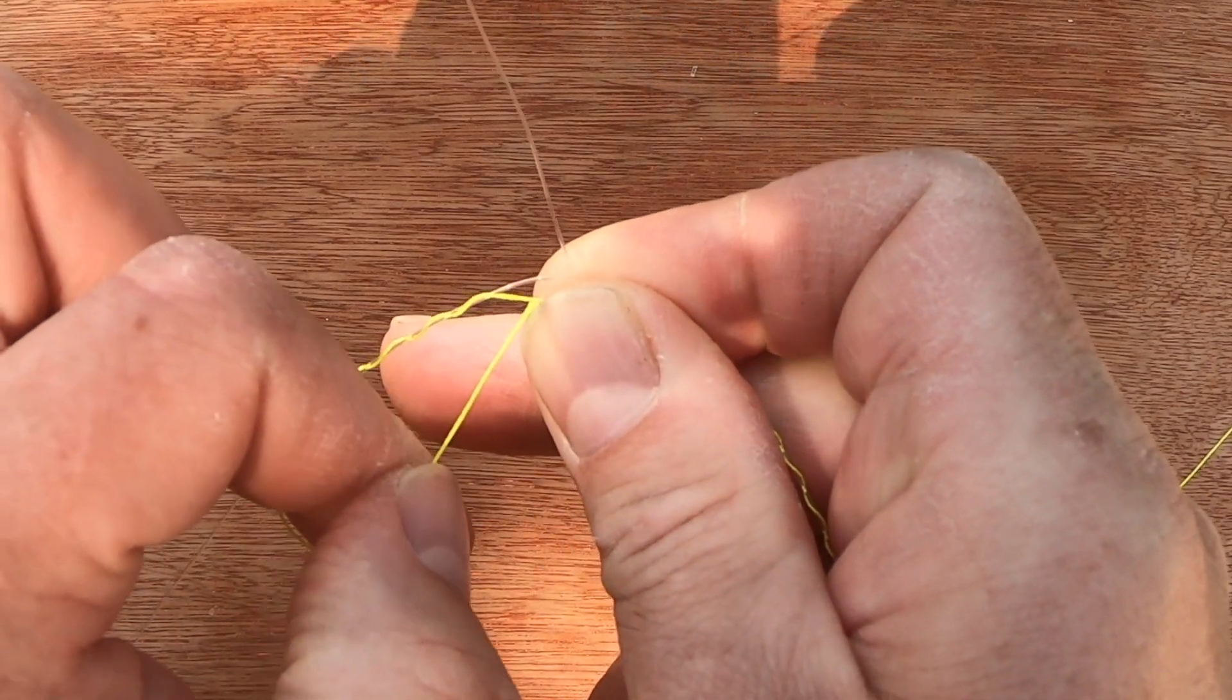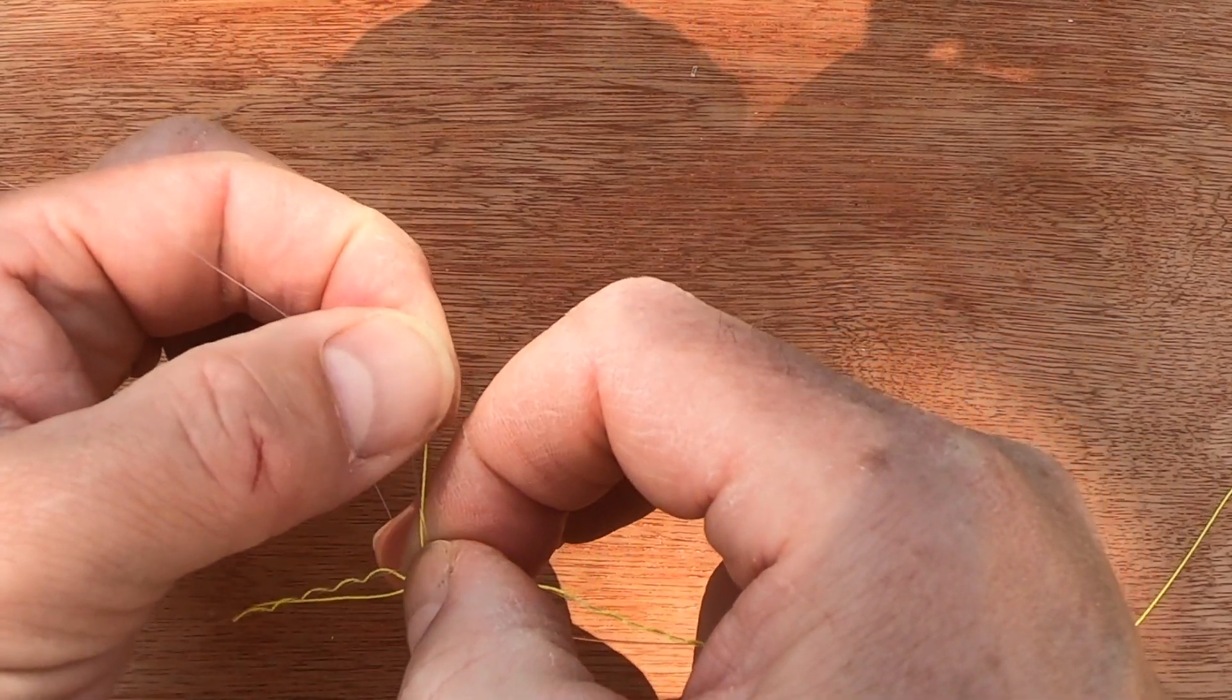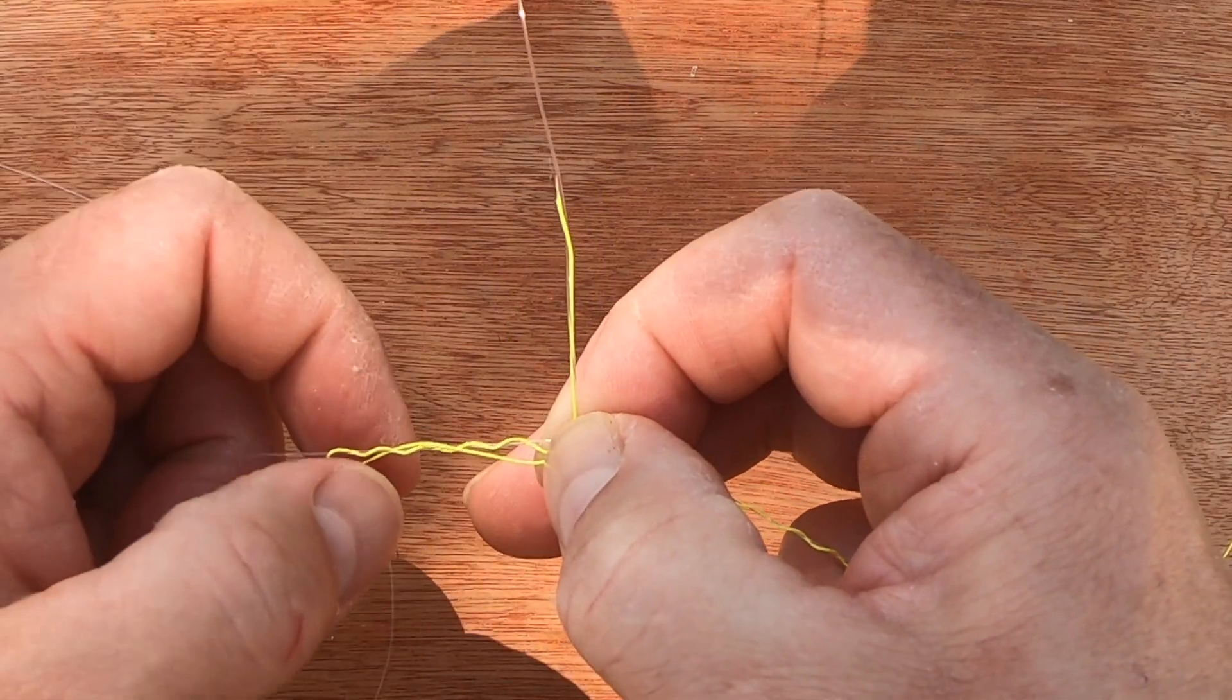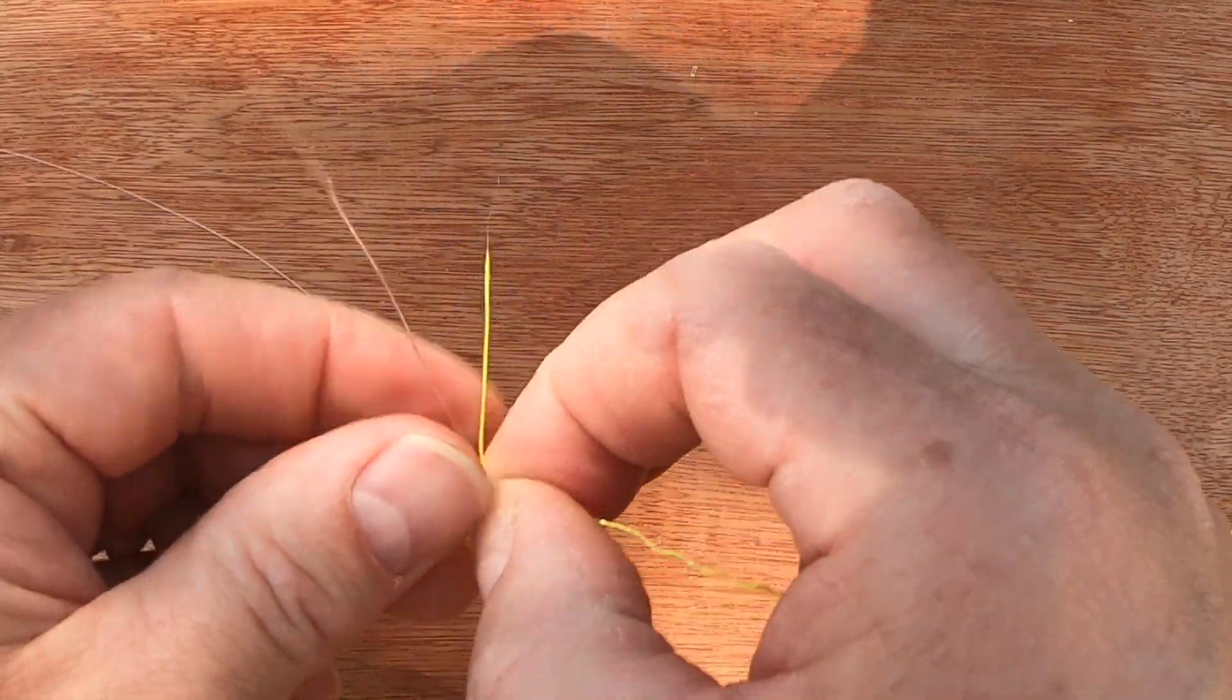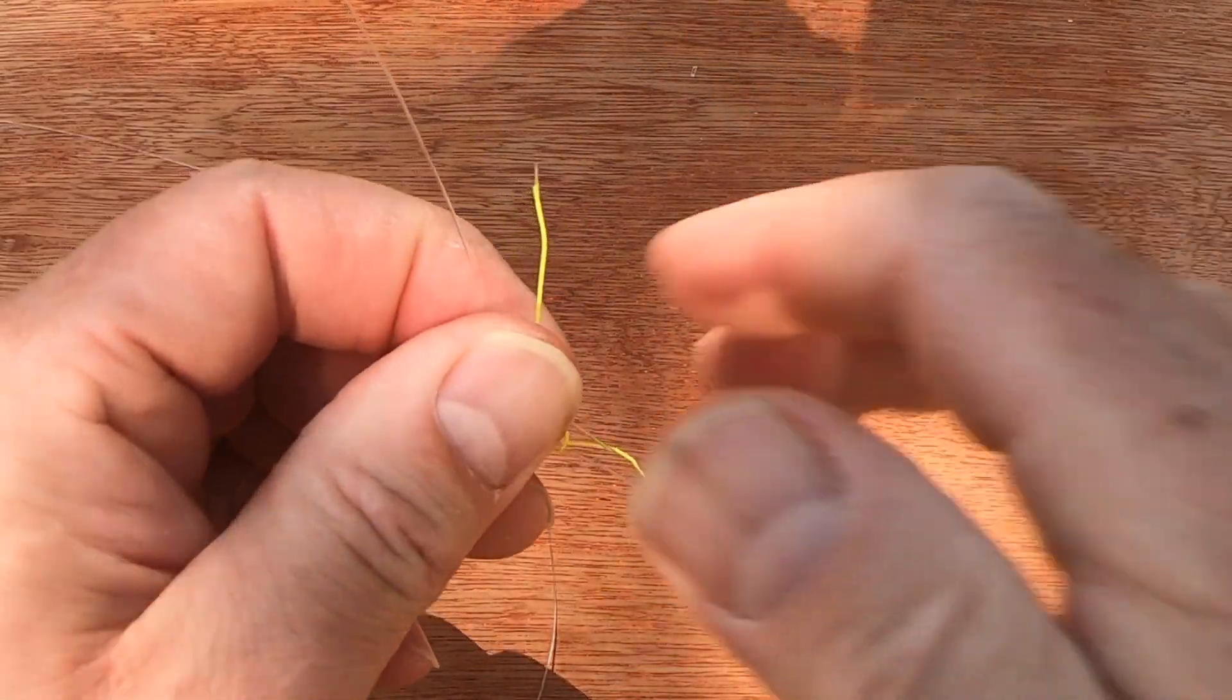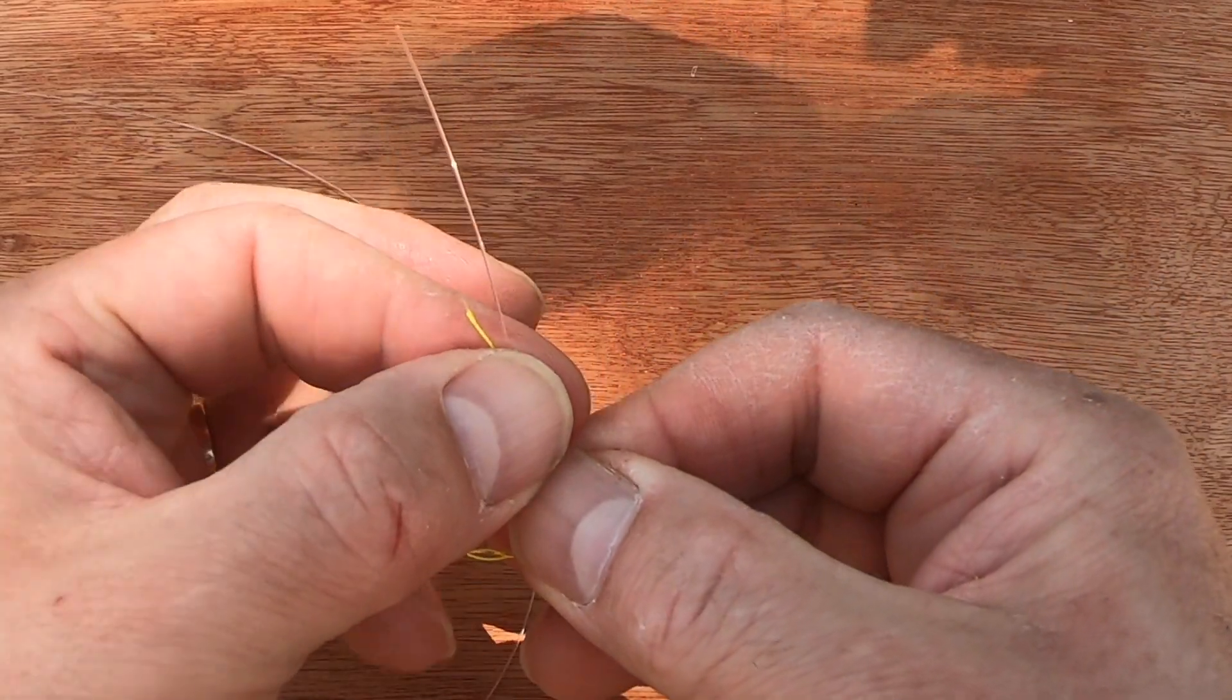I'm using braid, so when you come back over again for the last time, you've then got to pass it through the loop between your finger and thumb that you've created.